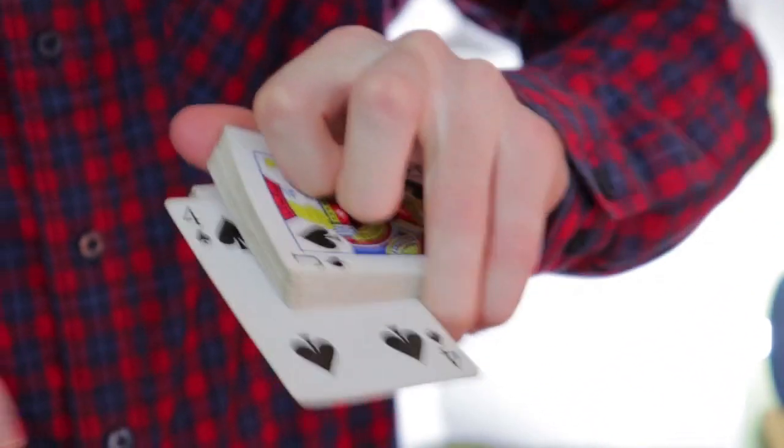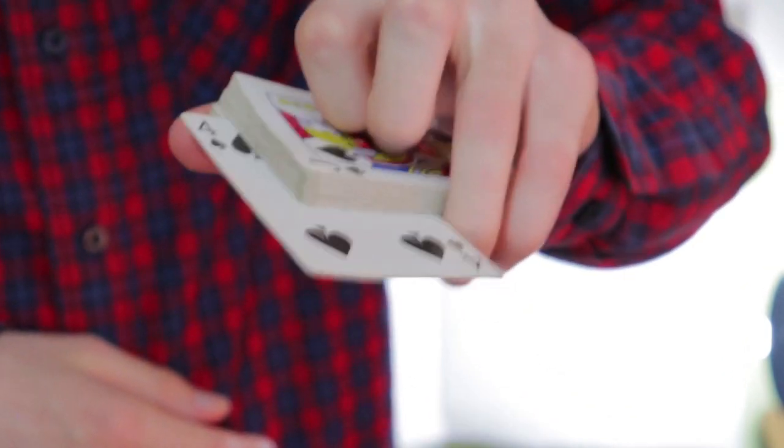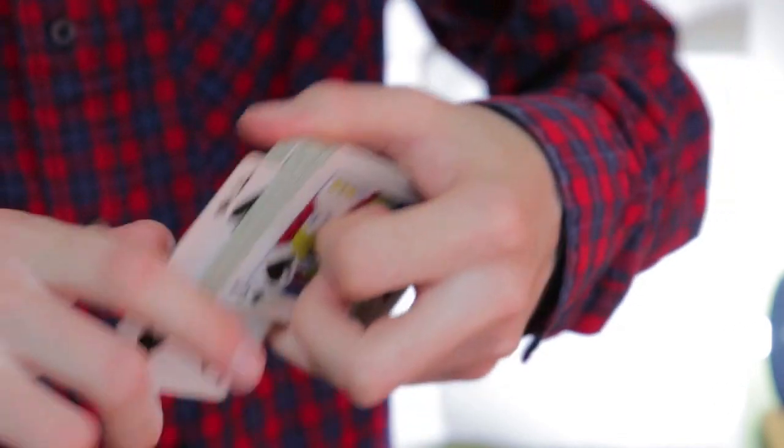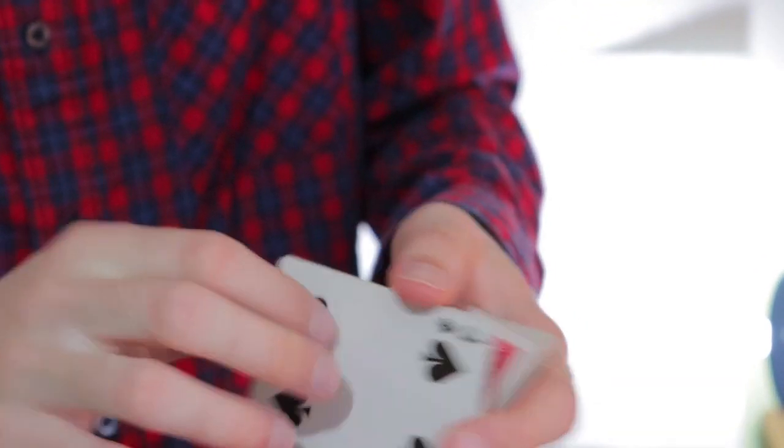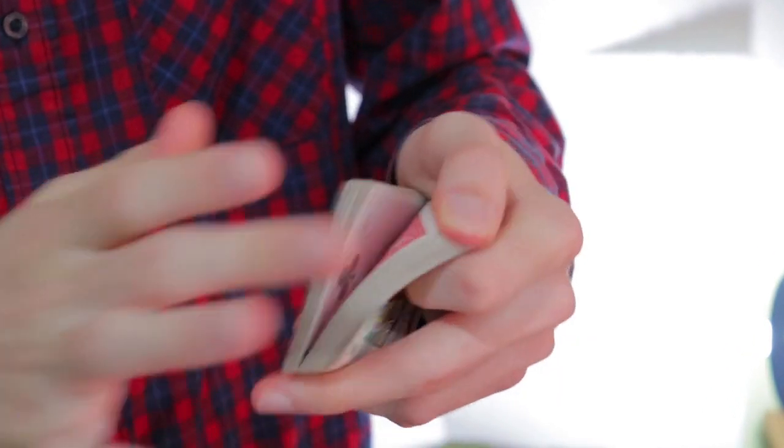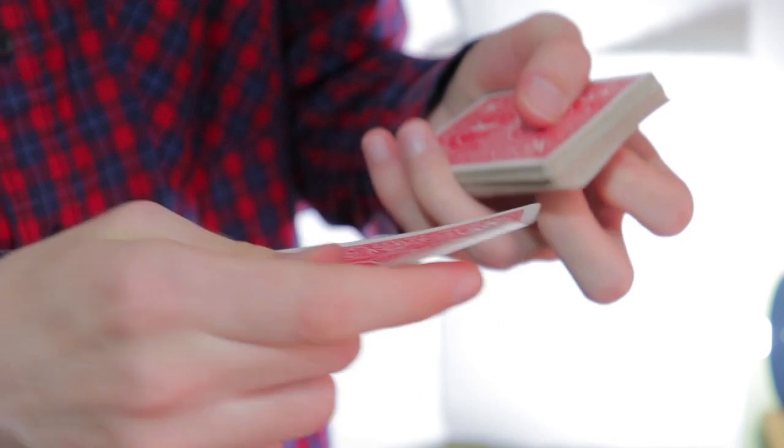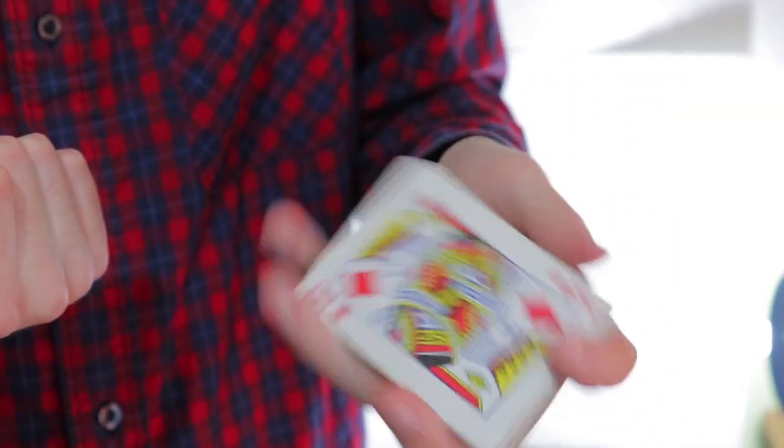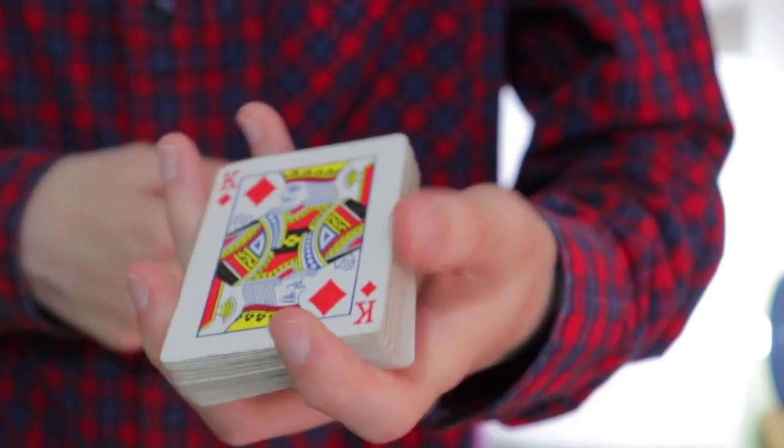То есть, у нас две карты здесь. И вот таким вот образом мы достаем из колоды, прямо из центра, две карты. Далее, вот так вот переворачиваем руку, показываем, что типа карта зрителя - четверочка пик. После чего берем, достаем прям правой рукой здесь две карты. То есть, взяли вот две карты и вот таким вот образом просто хватаем эти две карты и переворачиваем.